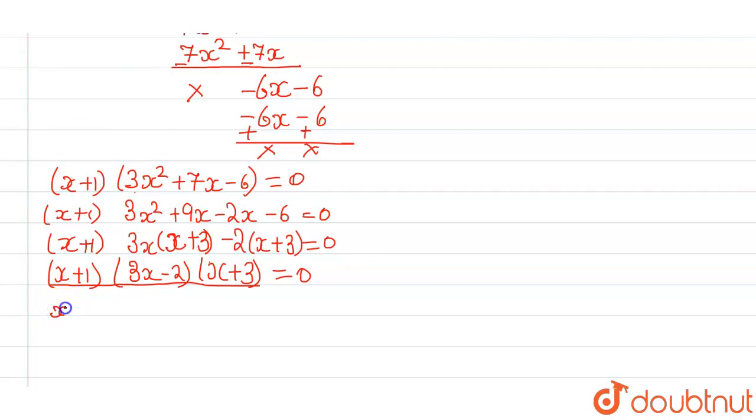These are the factors. Now, we can find the root of them. x plus 1 equal to 0, x will be equal to minus 1. 3x minus 2 equal to 0, x will be equal to 2 by 3. x plus 3 equal to 0, x will be equal to minus 3.